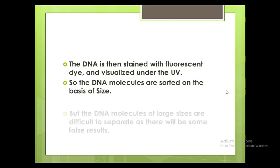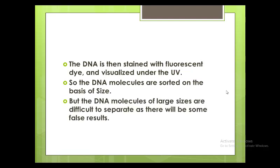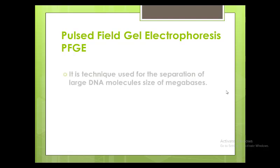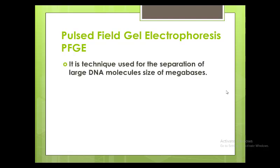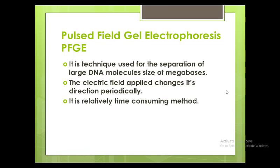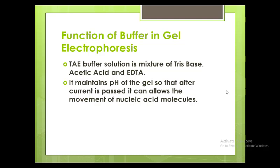DNA molecules are sorted on the basis of size, but large DNA molecules are difficult to separate accurately. So there is a technique called pulse field gel electrophoresis, or PFGE. It is used for the separation of large DNA molecules up to the size of megabases or hundreds of kilobases. The electric field applied changes its direction periodically. It is relatively time-consuming but can separate DNA molecules up to the size of a chromosome.